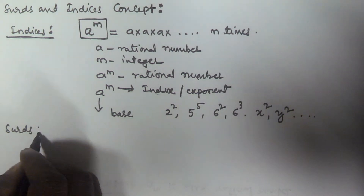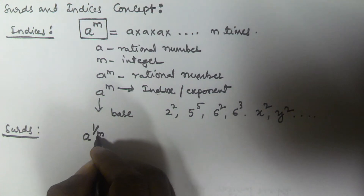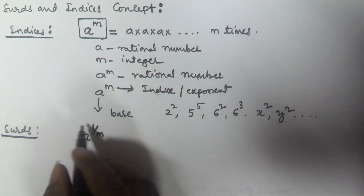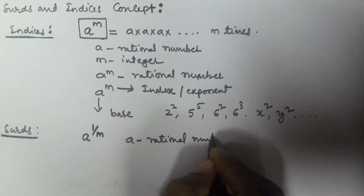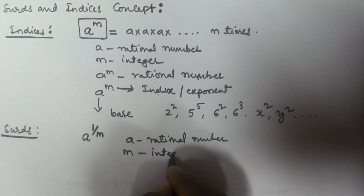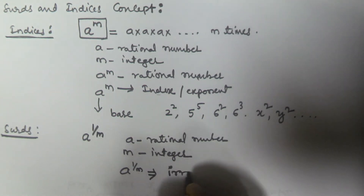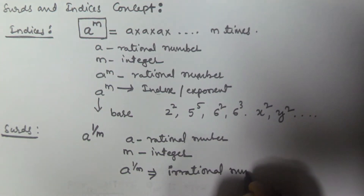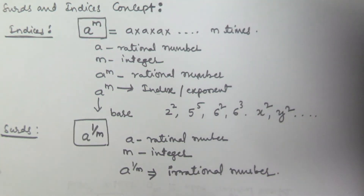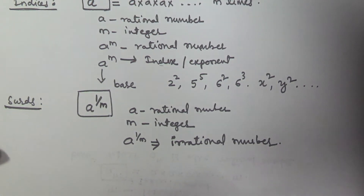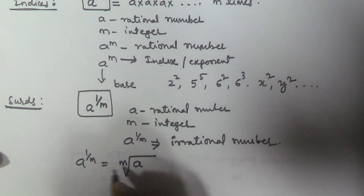Now we will see surds. If the given number is in the form of a to the power of one by m, where a is a rational number, m is some integer, and a to the power of one by m is an irrational number, then this number is called a surd. A to the power of one by m is called a surd, and it can also be written as m-root a.